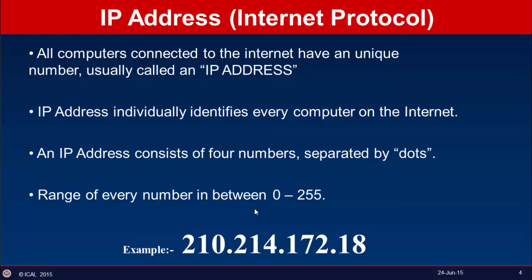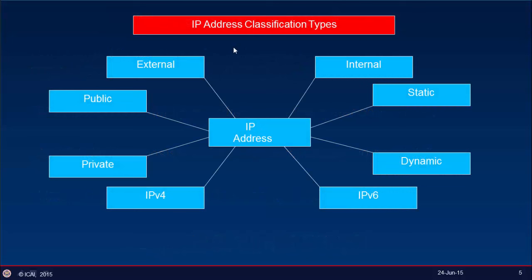The next version — logically people would assume it would be IPv5 — but actually IPv5 has been skipped and IPv6 has been launched directly, which I will cover. Now we move on to IP address classification types. We have internal IP, external IP, public IP, private IP, IPv4, IPv6, static IP, and dynamic IP. This looks confusing but I will try to simplify it as much as possible.